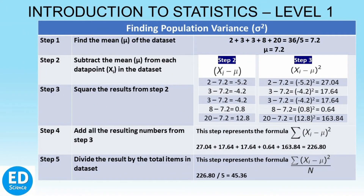Let us calculate the population variance using an example, using the same data set as the previous session with data points 2, 3, 3, 8, 20. First, to find the mean, we add 2 + 3 + 3 + 8 + 20 to get 36, then divide by the total number of items, which is 5, to get the mean of 7.2. So mu, the mean, is 7.2. In the second step, we subtract the mean from each data point: 2 minus 7.2 gives minus 5.2, 3 minus 7.2 gives minus 4.2, again 3 minus 7.2 gives minus 4.2, 8 minus 7.2 gives 0.8, and 20 minus 7.2 gives 12.8.